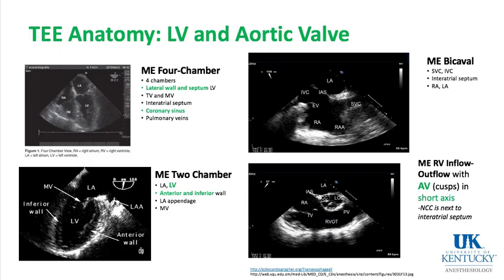The next topic is TEE anatomy combining left ventricle and aortic valve keywords from 2018. There are four major views. The mid-esophageal four-chamber view shows all four chambers: right atrium, right ventricle, left atrium, and left ventricle. In this view you see the lateral wall and the septum of the left ventricle. The anterior is in front, inferior is behind — you do not see those in this cut. You see the tricuspid valve, mitral valve, interatrial septum — a good view for PFO detection — and the coronary sinus, where a retrograde cardioplegia catheter is placed to deliver high-potassium solutions to rest the heart in diastole.